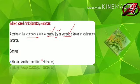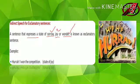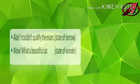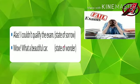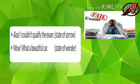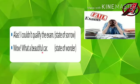For example: 'Hooray! I have won the competition.' It's a state of joy — so it is an exclamatory sentence. Next: 'Alas! I couldn't qualify the exam.' It is a state of sorrow. There are three types of expression: wonder, joy, and sorrow. 'Alas! I couldn't qualify the exam' — state of sorrow. 'Wow! What a beautiful car' — state of wonder. So we need to identify whether it is sorrow, wonder, or joy to convert it accordingly.